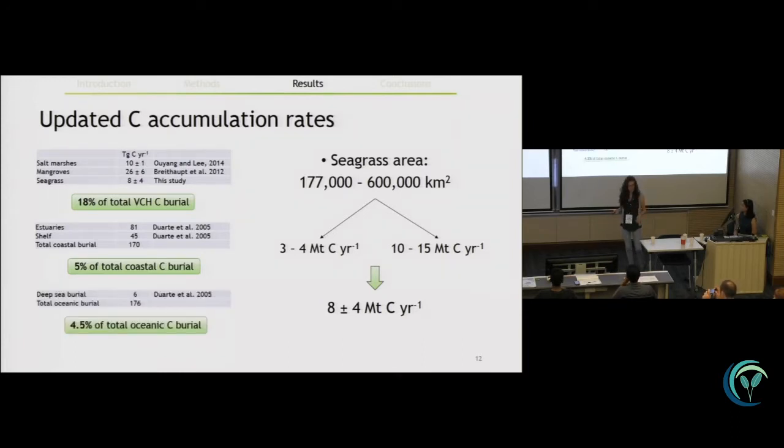They are contributing to 5% of the carbon that is buried in coastal oceans and to 4.5% to the total oceanic carbon burial. This is still lower than the 10% I showed in the first slide, but taking into account that these systems only occupy about 0.1% of the global coastal area, this is quite significant.